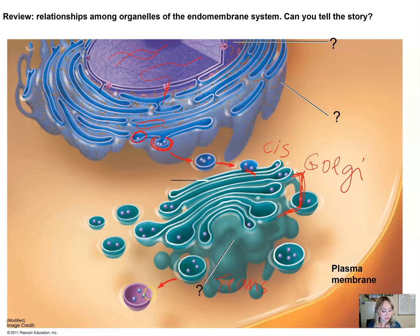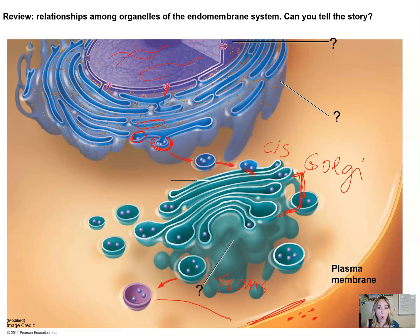Now one of two things will happen to this vesicle. The vesicle could be destined for secretion — it will fuse with the plasma membrane and secrete the protein out. For example, if this is a pancreatic cell, it is producing insulin and secreting it into the bloodstream. Alternatively, this vesicle can become a lysosome, staying inside the cell to help digest intracellular material.